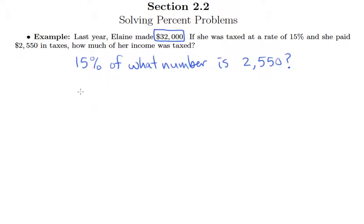So of course this sets up into the nice equation here. 0.15, of means times of course. What number is X. Is means equals. And then we have $2,550. All right, so I can divide both sides by 0.15 to isolate my X.